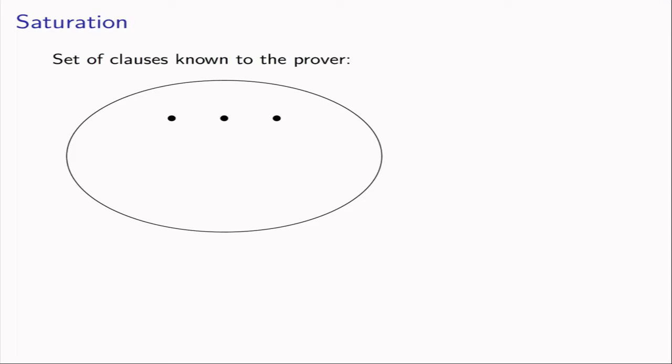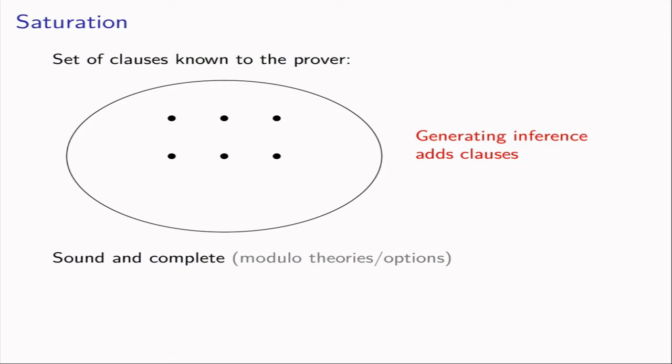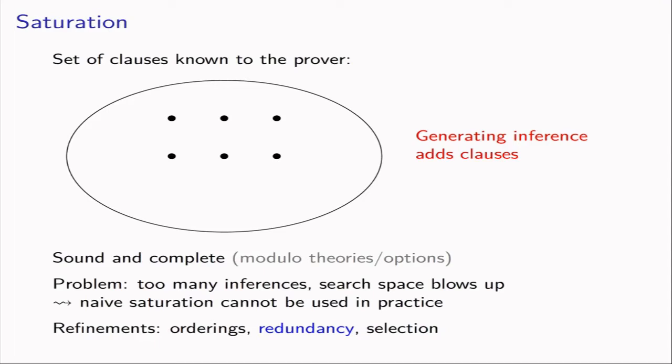Each of these dots represents one clause known to the prover, and our goal is usually to derive the empty clause, which means we've found a contradiction. We apply inferences to derive new clauses — these are called generating inferences because they add new clauses to the space. In theory, since superposition is sound and complete, this allows us to prove everything provable. But in practice, the naive saturation procedure quickly runs into problems because there are far too many inferences and the search space blows up — we run out of time or memory.